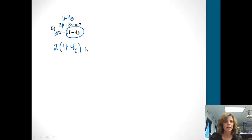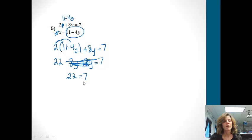And then let's distribute, so we'll get 22 minus 8y plus 8y equals 7. And then if we try to combine like terms, negative 8y plus 8y just totally cancel each other out. So I'm just left with 22 equals 7.